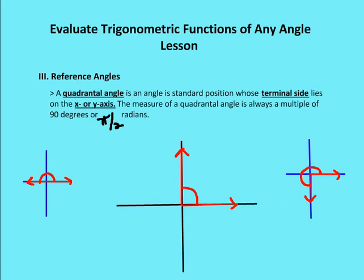The last thing we need to talk about are quadrantal angles. Quadrantal angles are angles in standard position whose terminal side lies on the x or y axis. The measure of a quadrantal angle is always a multiple of 90 degrees or pi-halves radians — so 90 degrees, 180 degrees or pi radians, 270 degrees or 3 pi-halves radians, and 360 degrees or 2 pi radians. A quadrantal angle is simply an angle in standard position whose terminal side lies on the x or y axis.